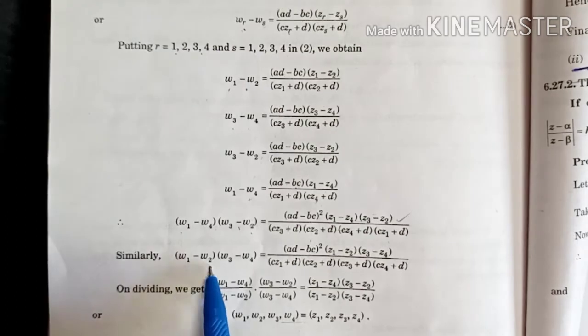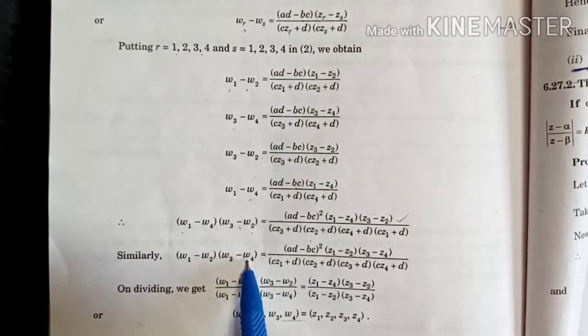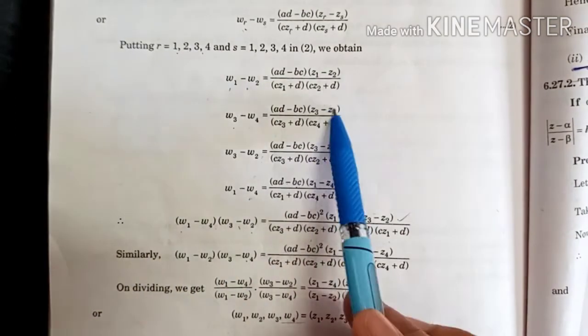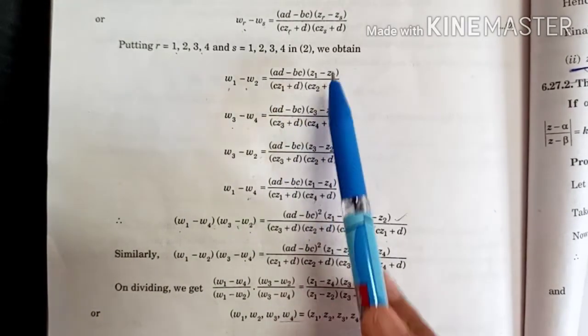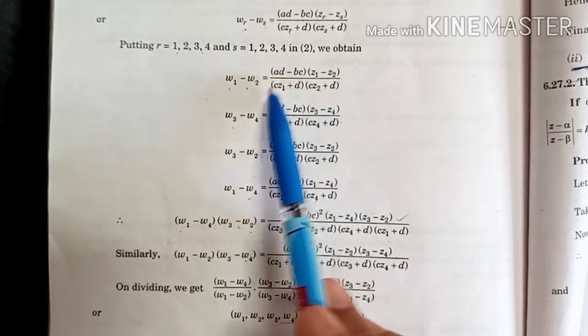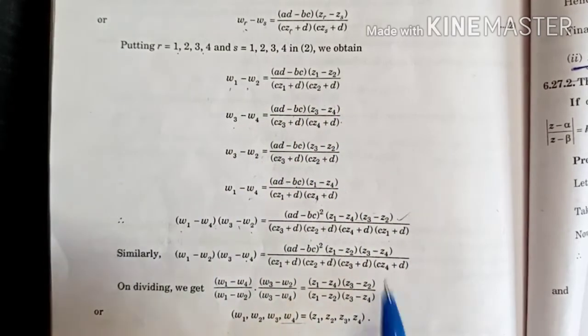Similarly, denominator is W1 minus W2, W3 minus W4, we have to find that out. So product of these two terms. Similarly numerator has AD minus BC squared into product of these two. Denominator all four terms separate, so product of all four.